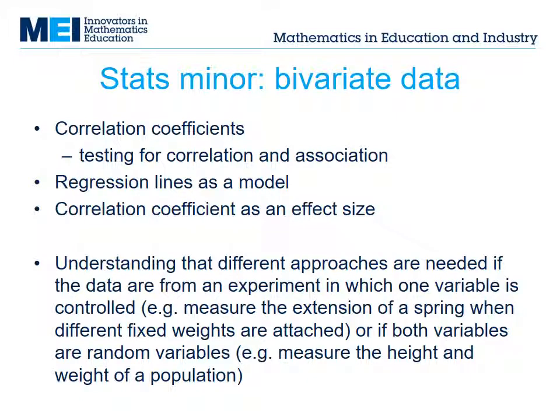One of the themes of the minor option is bivariate data of different kinds — testing for correlation and association where appropriate, and using regression lines as a model. One new idea is that of the effect size for correlation, a simple concept widely used in the social sciences or anywhere that uses big data.